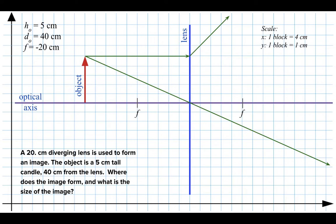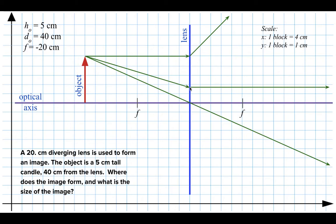The third ray is also a little different. Instead of going through the focal point, for a diverging lens I think about the ray that is heading towards the opposite focal point — and that's the one that gets bent parallel. The easiest way to understand this is if light were coming from right to left, it would get bent away from the focal point. So the ray heading towards the far focal point gets bent parallel.